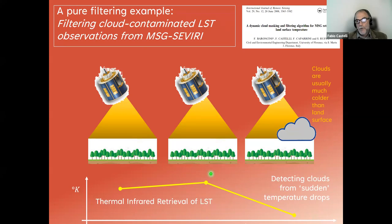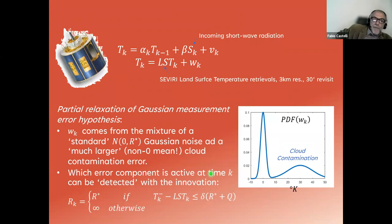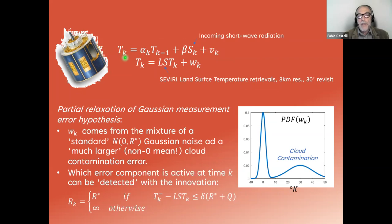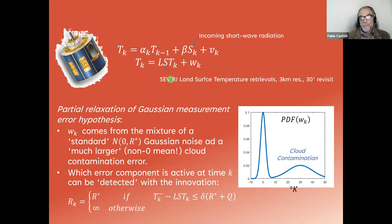I assume you already know how a Kalman filter works. The linear Kalman filter is based on a simple forecast equation: in this case, temperature at time k is related to temperature at time k-1 via an empirical coefficient, forced by the incoming shortwave radiation measurable from satellite, plus noise. The observation operator is very simple — we assume the temperature detectable from the satellite is identical with some error to the state we want to estimate. We relax the main Gaussian hypothesis for the measurement error and instead assume a bimodal distribution.